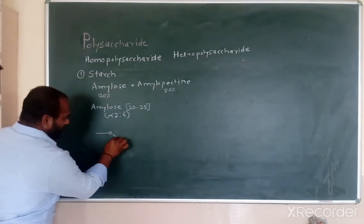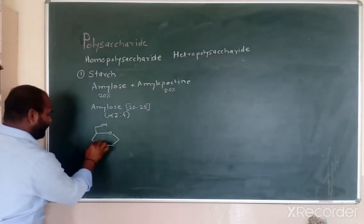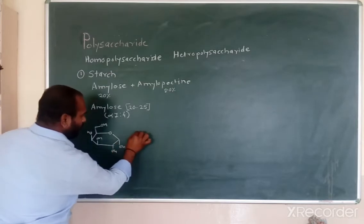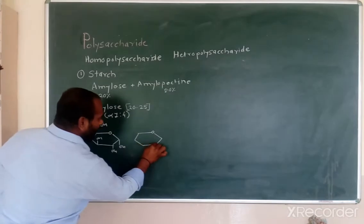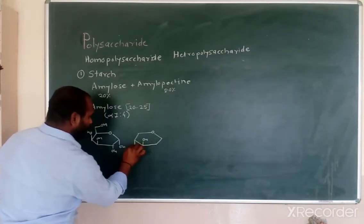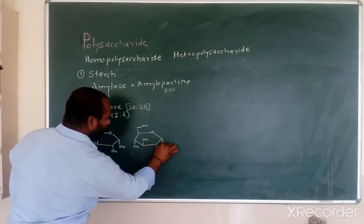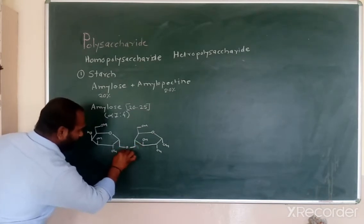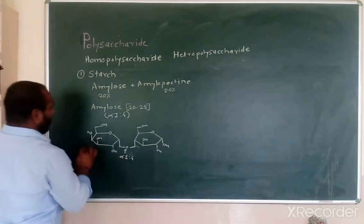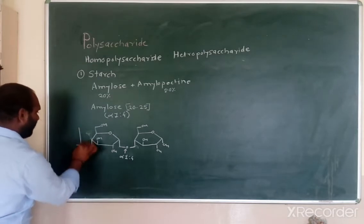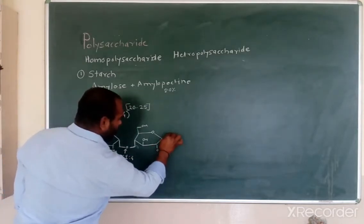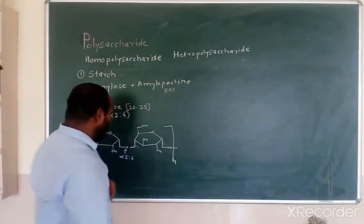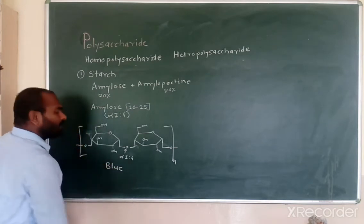Now let's consider the structure of amylose. Here we are writing the glucose structure. Two units of glucose are joined by alpha 1,4 linkage, and they join a number of times to result in the formation of amylose. This amylose gives a blue color in iodine solution.